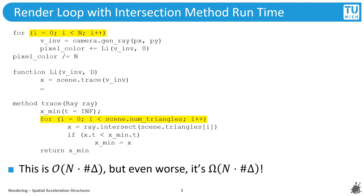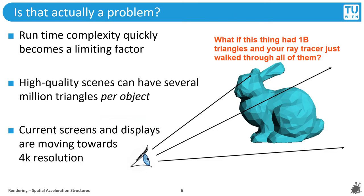If we do a very simple runtime analysis of this basic algorithm, we find that with big O notation, the runtime is governed by the number of samples times the number of triangles in our scene. But that is not the worst case performance — that's already the best case performance that we will get out of it. And a justified question would be: is that actually a problem? And it is.